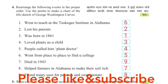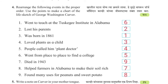Activity number 4: Rearrange the following events in the proper order. Use the points to make a chart of the life sketch of George Washington Carver. Ya tikaru hain aapan video jo aahit, tera to waz karuun — ya ghatna yoggyatya kramanye lawa eche aahit.